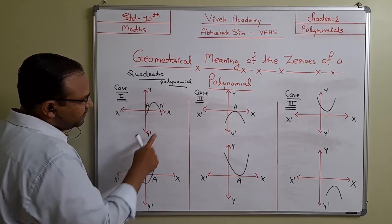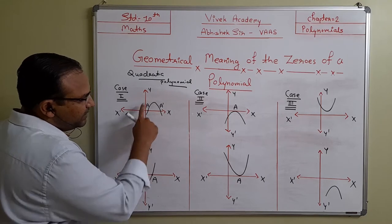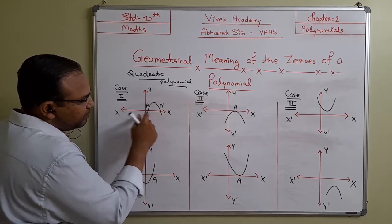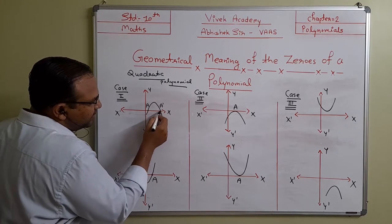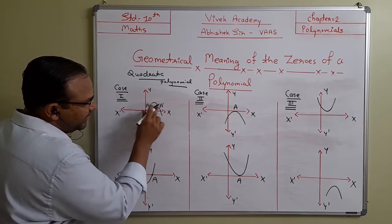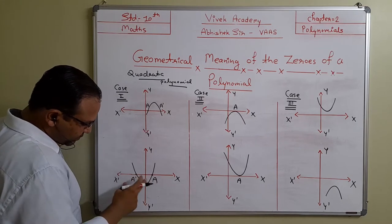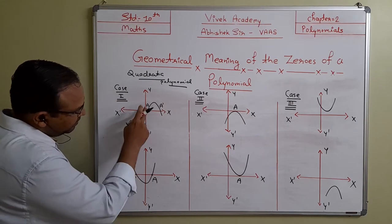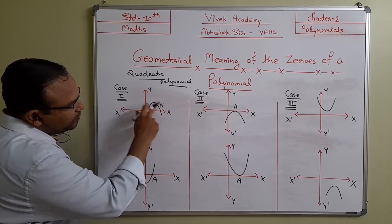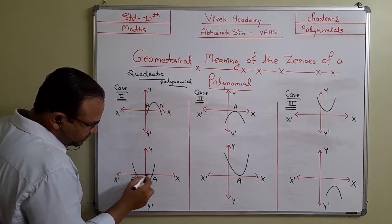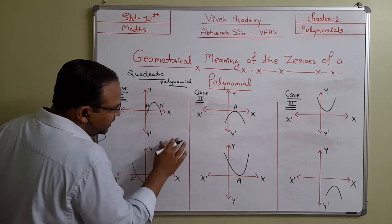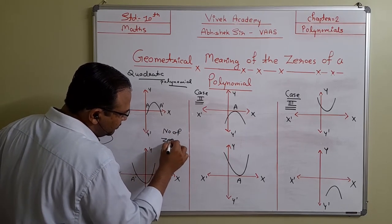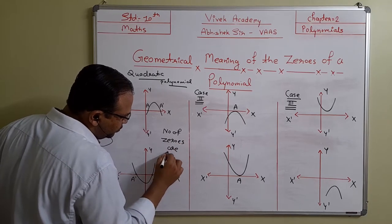In case number one, the x-axis and y-axis are given. Here we have an open downward parabola cutting the x-axis at two distinct points A and A dash. In the second diagram of case one, the parabola may be open upward or open downward — in both situations it is cutting the x-axis at two parts, so the number of zeros is two.